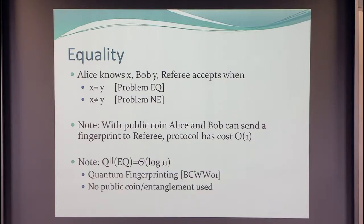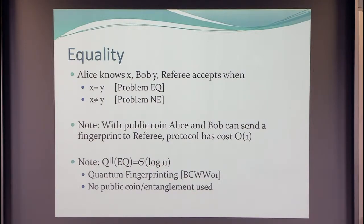Note that public coin protocols are not interesting here. If you have a public coin, then you can use fingerprinting and have an order-one complexity protocol for these problems. So we are looking at the private coin version. There's a very nice result due to Burman et al. from about 15 years ago that shows that if you have quantum messages, then you can solve equality with log n bits of communication — Alice sends a quantum fingerprint, Bob sends a quantum fingerprint, and then they can do the swap test to check whether these fingerprints are the same.